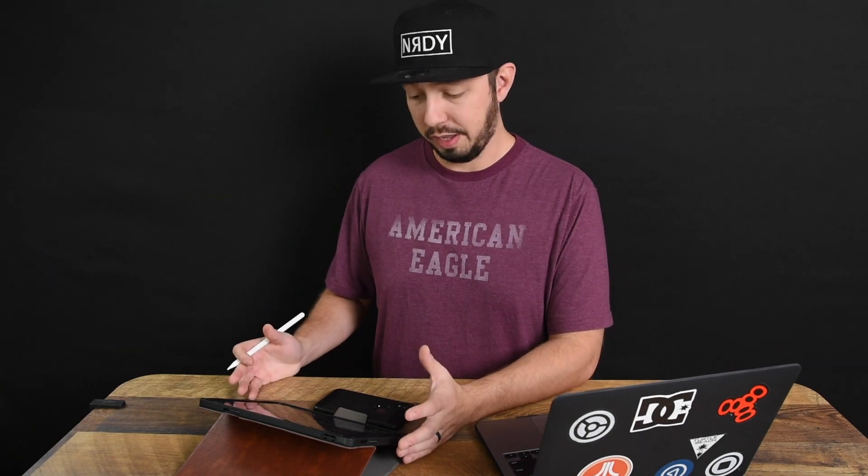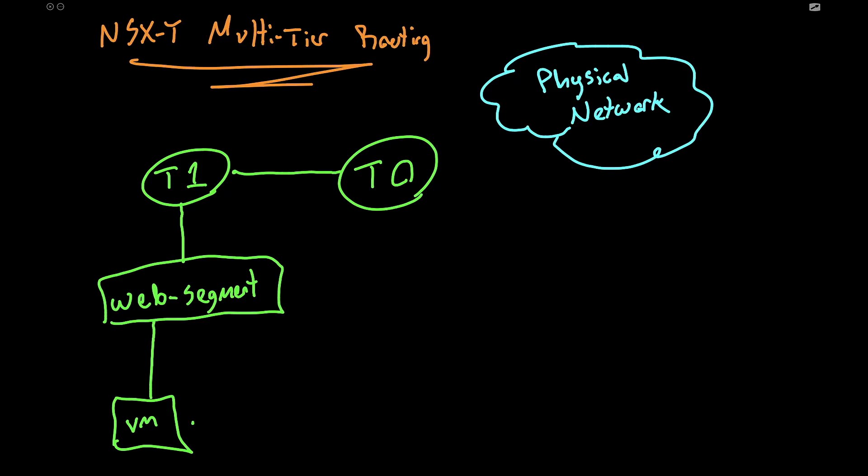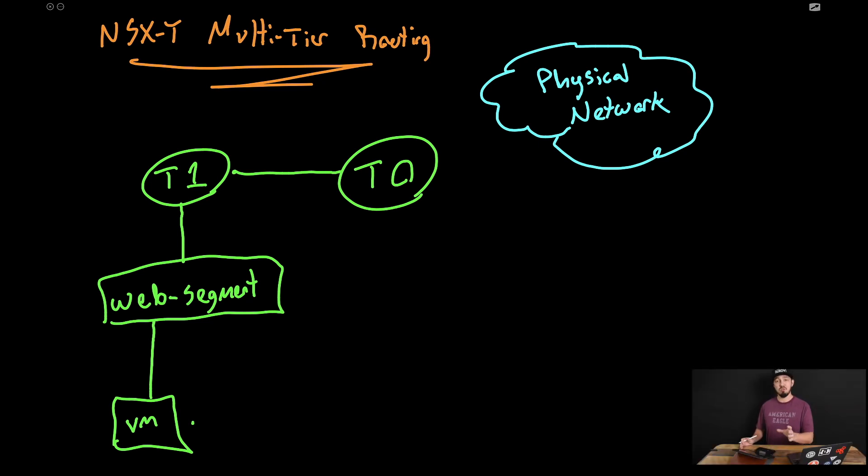All right. So when we talk about NSX-T multi-tier routing, what are we talking about? It's really this design here where we have a T1 gateway and a T0 gateway. Now, the first thing I want to address is what is a T1 and a T0? These are just logical routers. That's all they are. They have routing tables. They have interfaces. They run a version of a routing protocol, that sort of thing. So don't let the terminology get you too confused.